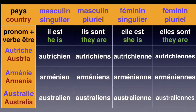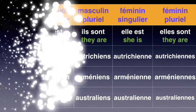Il est autrichien, he's Austrian. Elle est autrichienne. Il est arménien, he's Armenian. Elle est arménienne. Il est australien, he's Australian. Elle est australienne. Now if you've noticed, in French we do not use capital letters when we talk about nationalities — in English you would use capital letters, not in French.